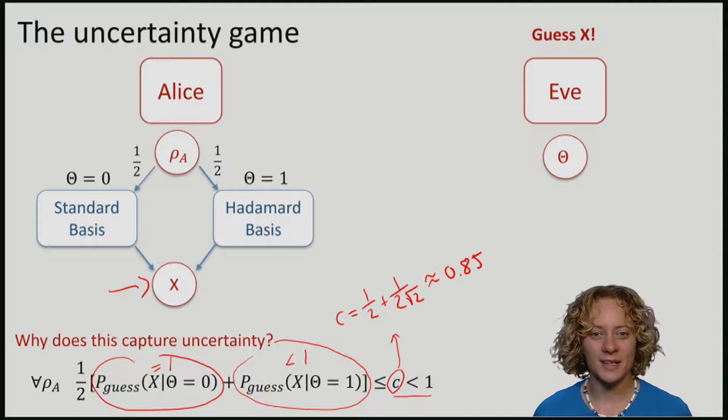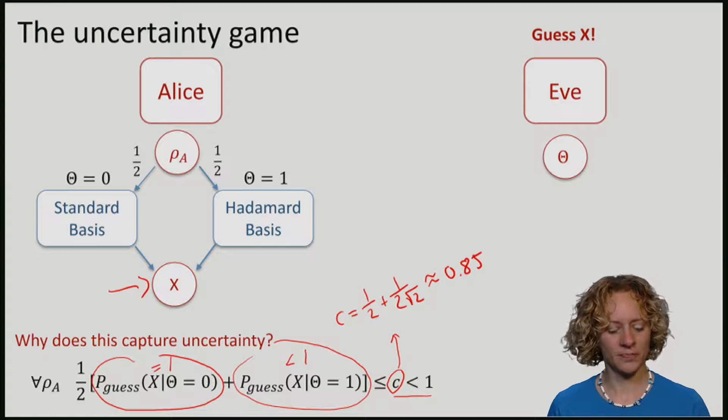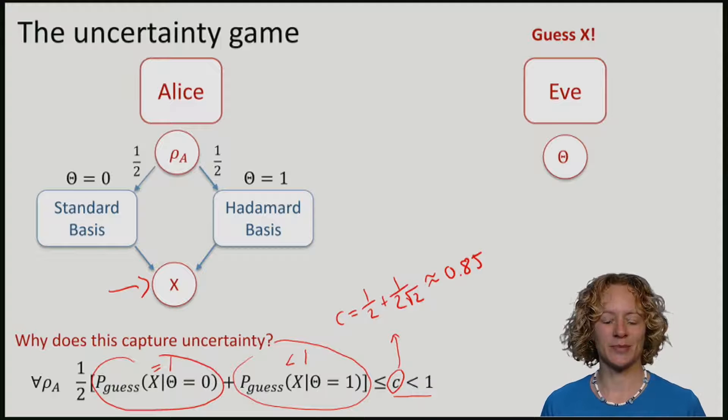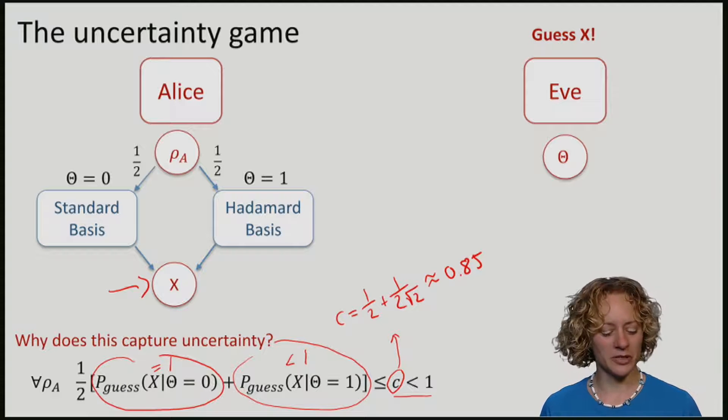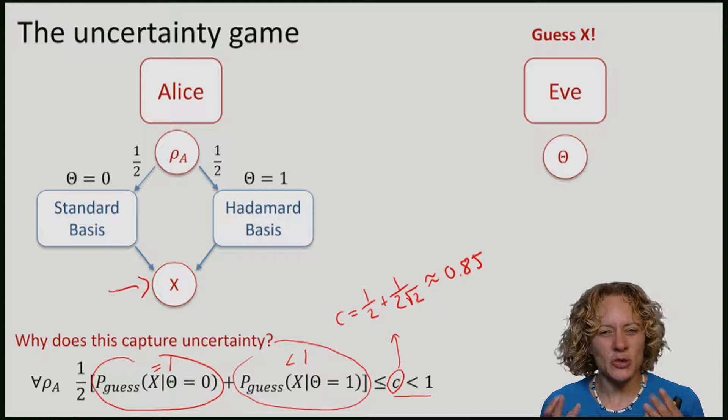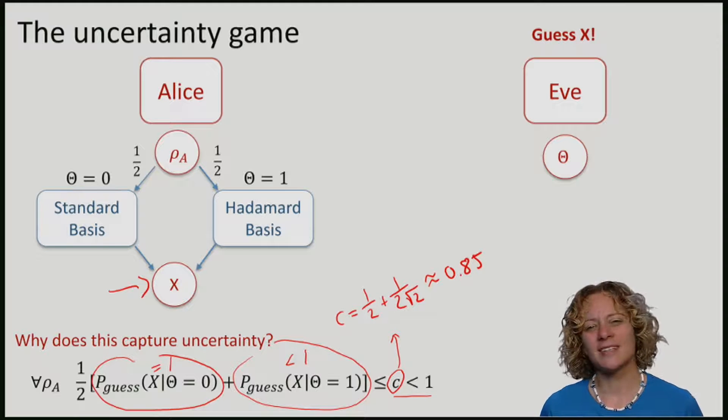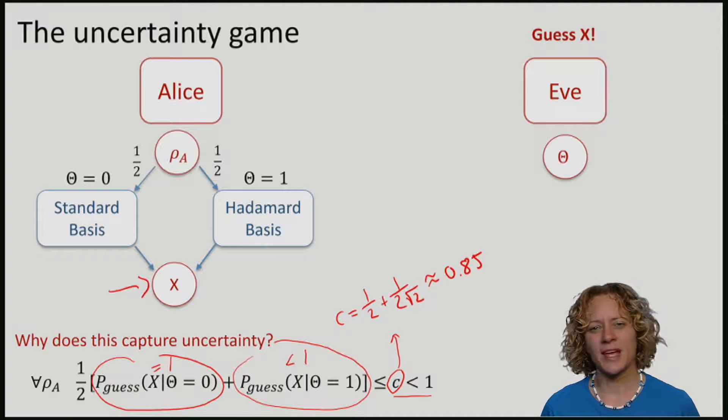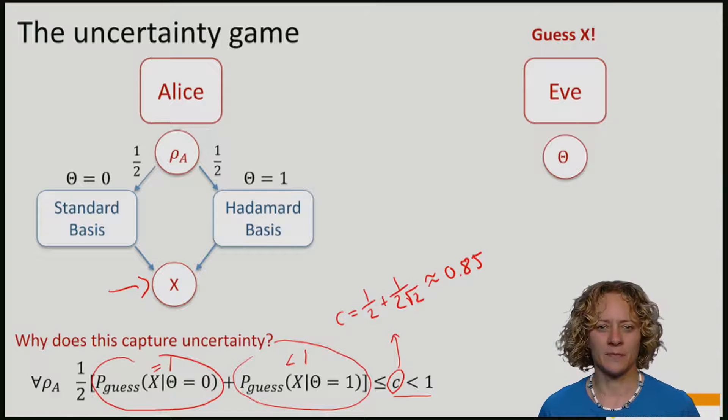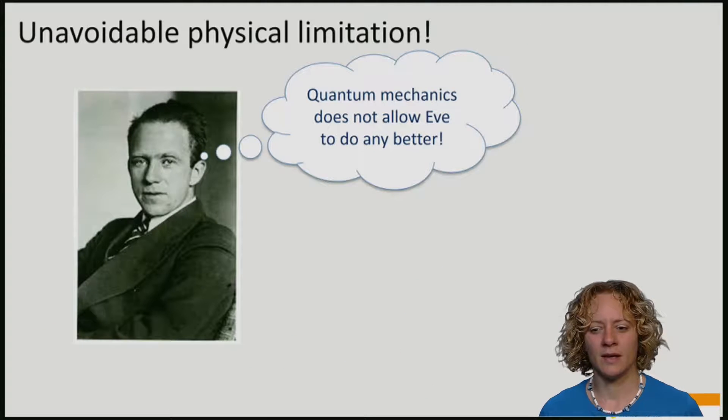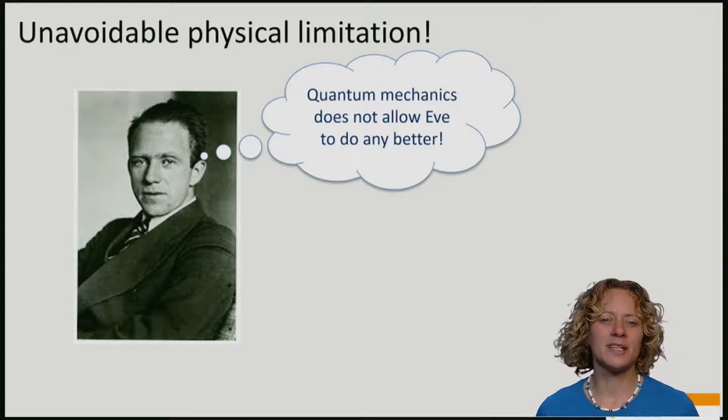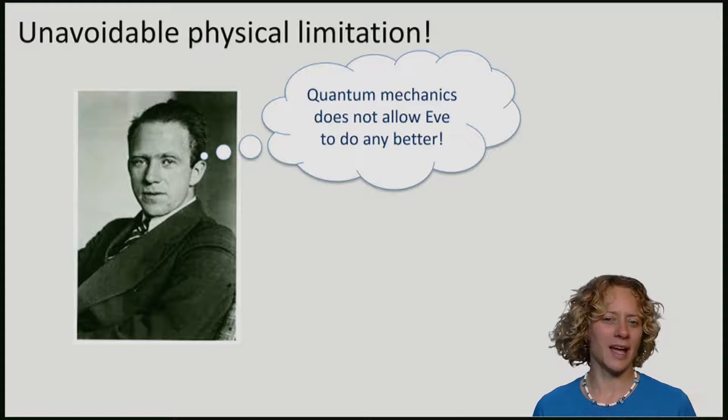With a theme that just like the monogamy of entanglement cannot be circumvented by anyone, also the uncertainty principle imposes an unavoidable physical limitation on Eve. There is just no state that she can prepare that allows her to do any better, even if she had a quantum computer and is much smarter than Alice. You can think that what the uncertainty principle says is really that quantum mechanics does not allow Eve to do any better.